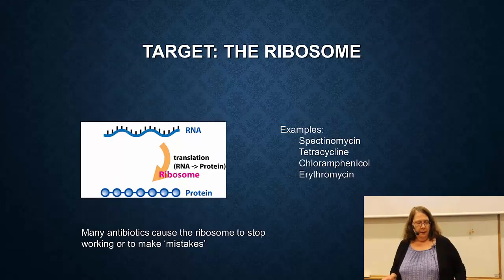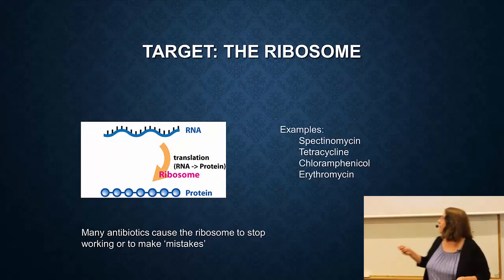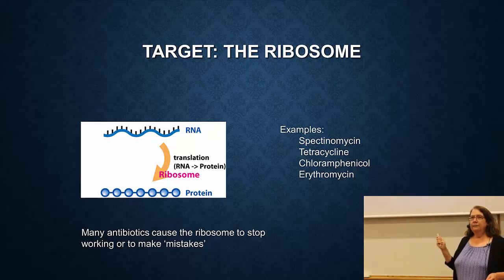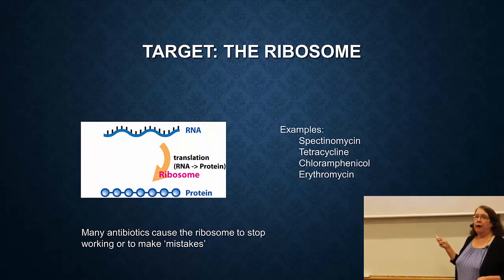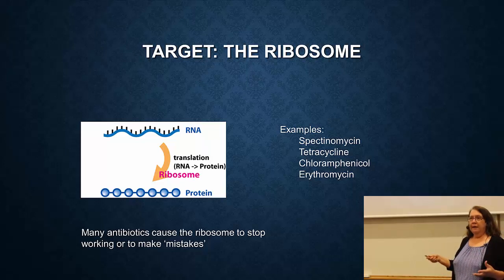The third type of general target is the ribosome. We're on the last step now from RNA to protein — and this is the ribosome. There are many, many antibiotics and antibiotic classes that affect the ribosome. They cause it either to simply stop working or to make lots of mistakes in protein synthesis. Some examples are shown here.